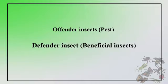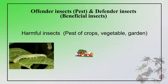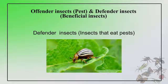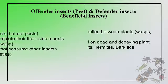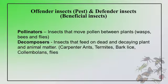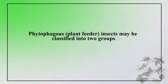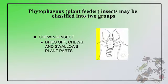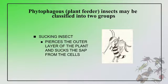As you see in the slides, there are harmful insects — pests of crops, vegetables, and garden — and defender insects that eat pests. These include parasites and predators, and the beneficial ones are pollinators. The phytophagous insects, that is plant feeder insects, may be classified into two broad groups: the chewing insects that bite, chew, and swallow plant parts, and the sucking insects that pierce the outer layers of the plant and suck the sap from the cells.